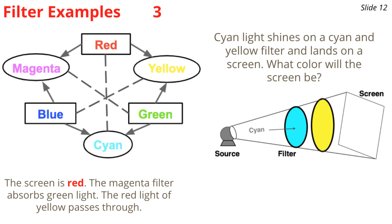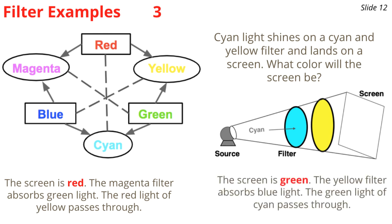In the final example, cyan light — a combination of blue and green primaries — approaches a cyan and yellow filter. The cyan filter would absorb red, but red isn't present, so blue and green both get through. Then the yellow filter absorbs the blue, leaving only green, which passes through and lands on the screen, making the screen look green.